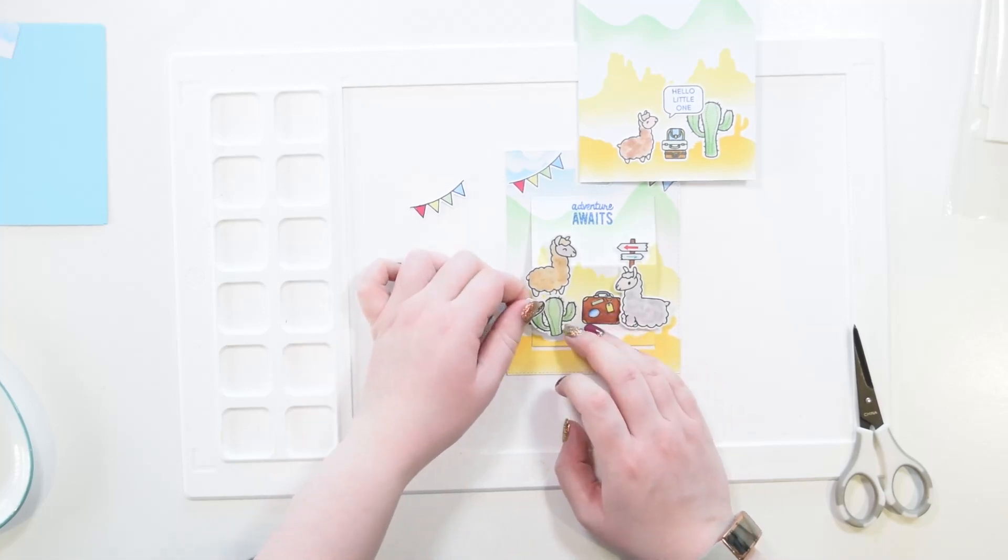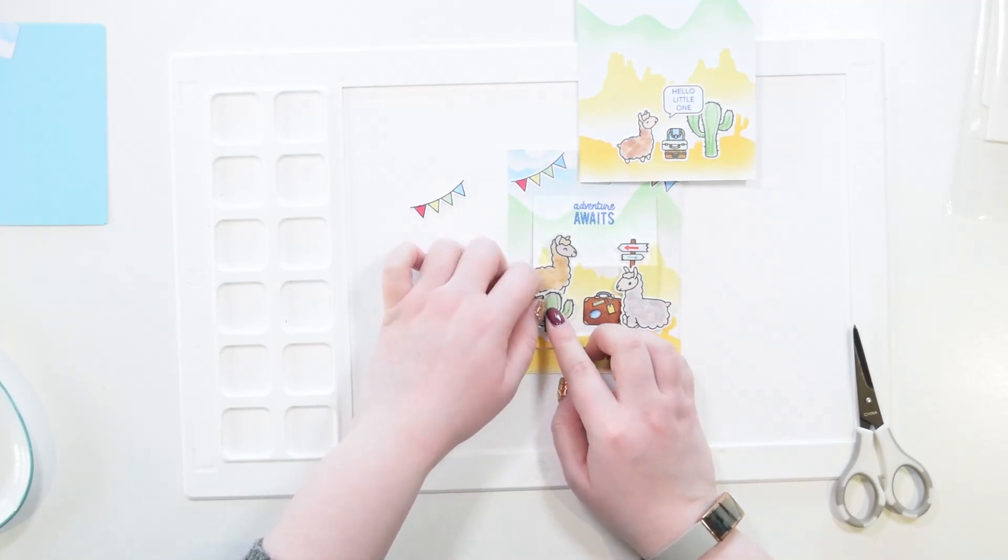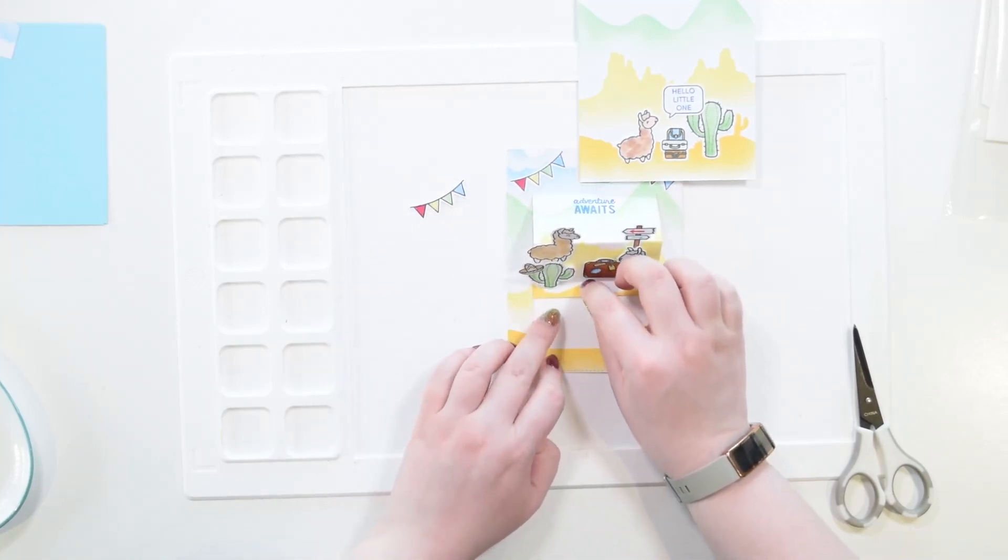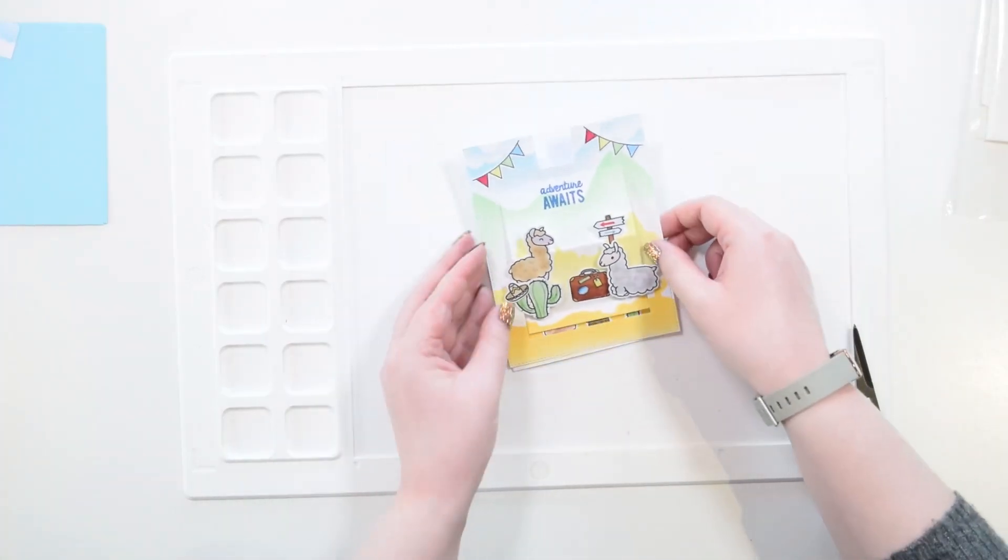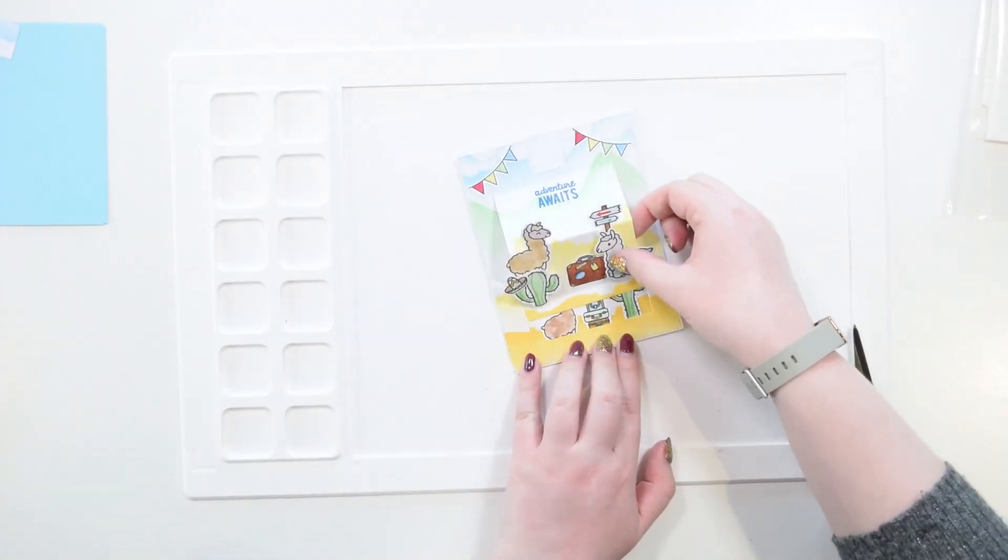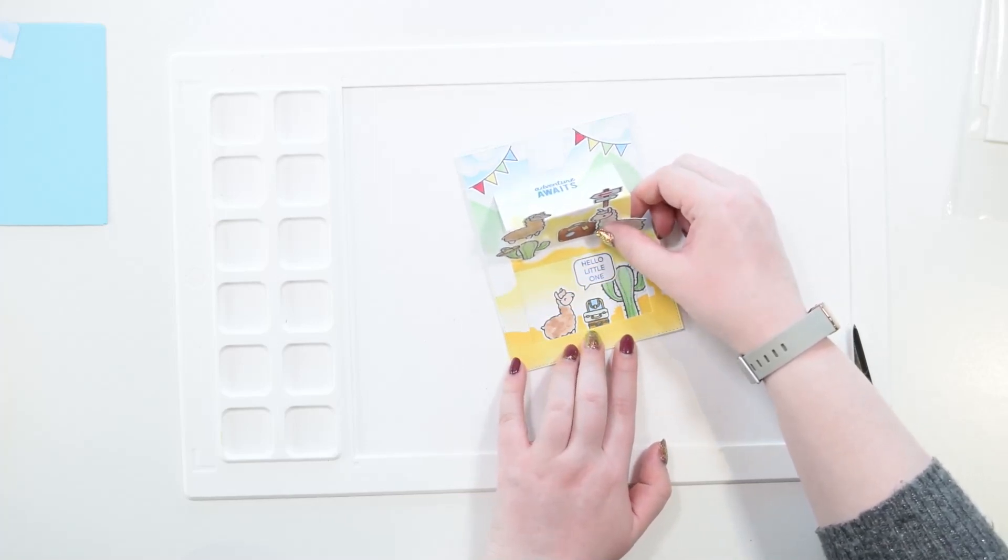This combined with the crease lines will create some really nice dimension. I've trimmed down this cactus image so I can place him where I want him and he won't interfere with this bottom crease line. With everything stuck into place on my card blank and this front panel, it's now time to move on to assembling the slider mechanism.